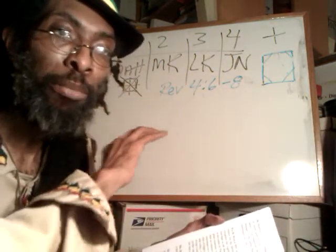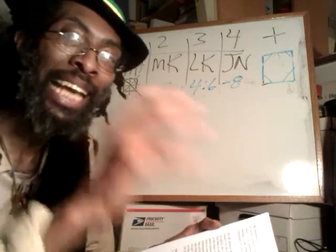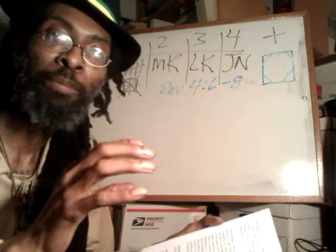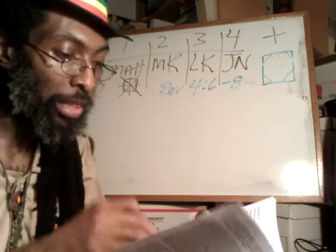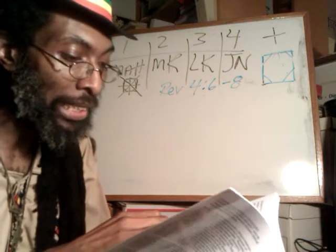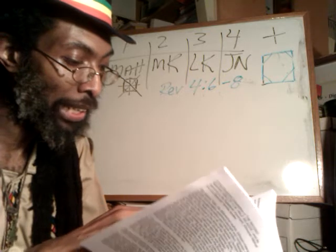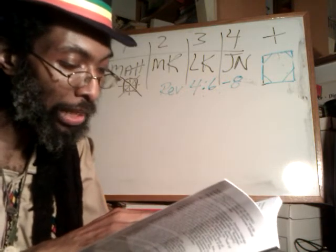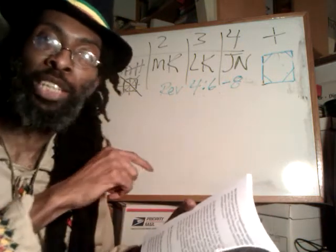This gospel will be preached in all the earth and then the end will come. If you wonder why the end has not come, it's because the good news has not been proclaimed in all of the world — there are still many who have not heard. And His Majesty says then Matthew, Mark, Luke, and John — the four gospels in which the sayings of Getachin, our Lord, are recorded — are pillars for all men on the earth.